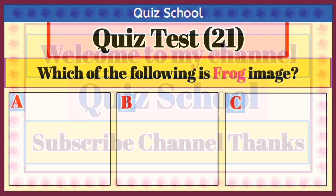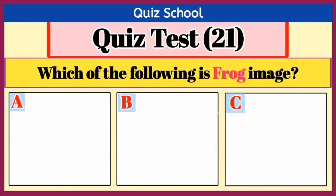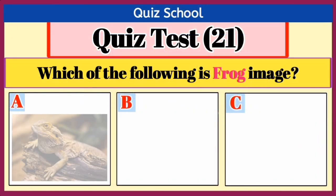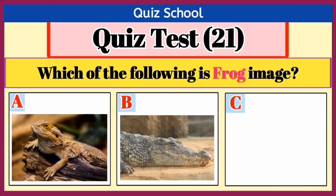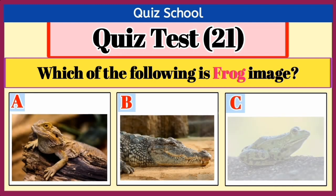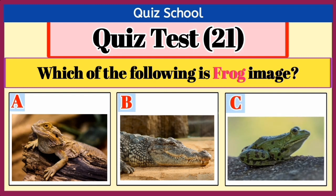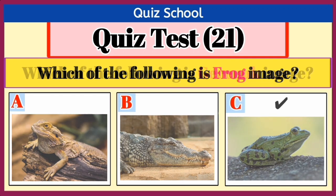Question number 1. Which of the following is the frog image? There are three options in the answer: Option A, Option B, or Option C. Right answer is Option C.